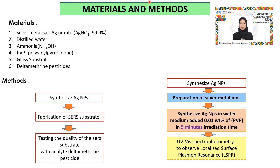These are the materials and methods. We use silver nitrate (99.9%), distilled water, ammonia, PVP (polyvinylpyrrolidone), glass substrate, and deltamethrin pesticide. The method involves three steps: first, we synthesize the silver nanoparticles; next, we fabricate the SERS substrate; and then we test the quality of the SERS substrate using deltamethrin pesticide as the analyte.